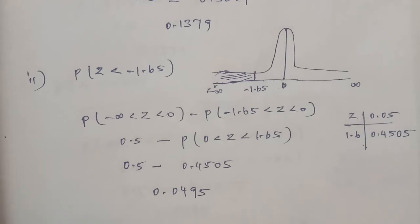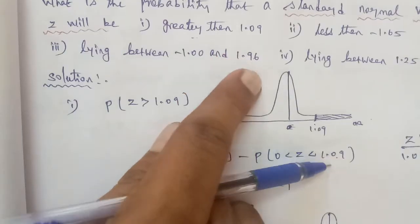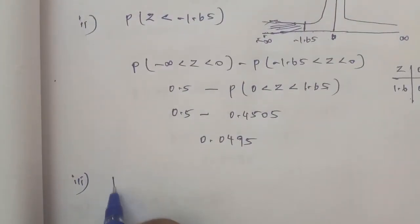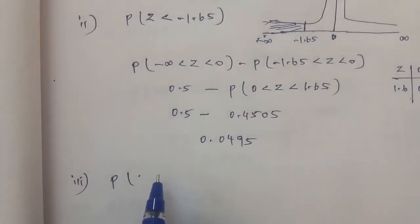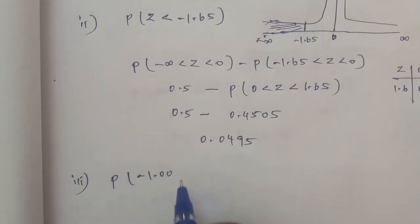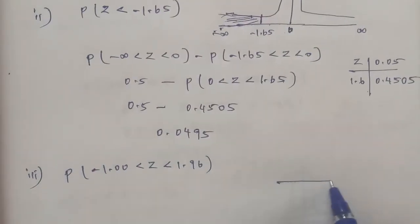For subdivision 3, the given question asks for the probability of Z lying between minus 1.00 and 1.96. So we need P(minus 1.00 < Z < 1.96). Again, draw the bell-shaped curve with mid value 0, extending from minus infinity to plus infinity.